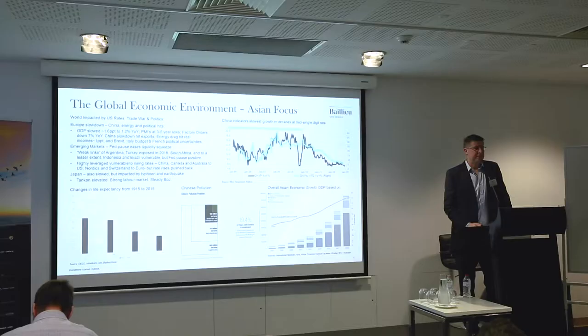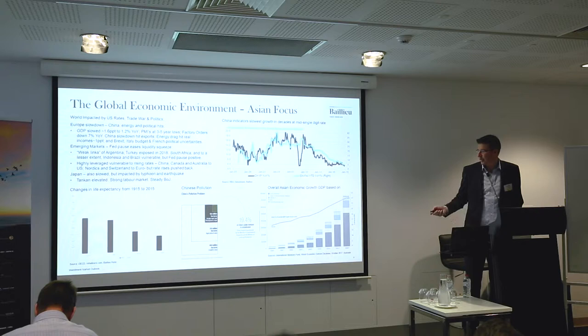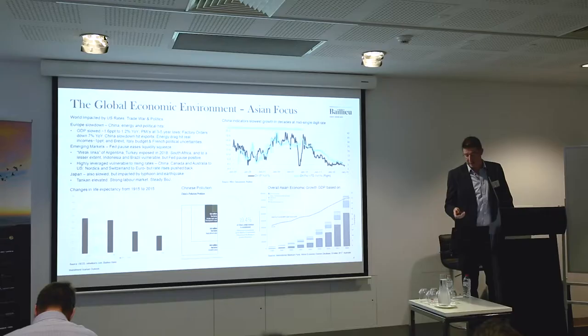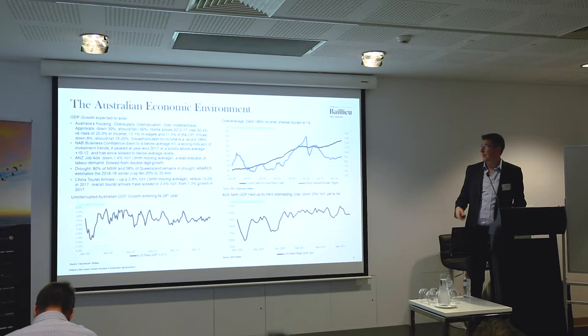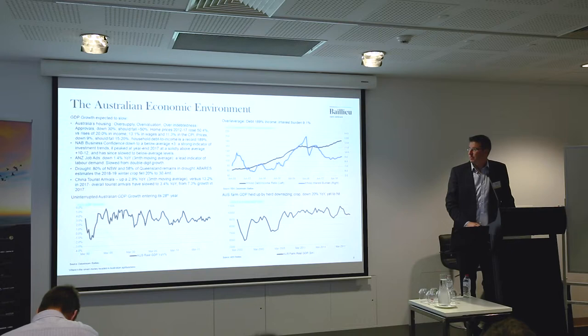Another key driver relates to China's pollution problem. This chart shows a square representing the whole land mass of China — and within that, the amount they're able to produce, and the amount of land that's actually polluted. About 20% of China's land mass is polluted and unable to grow crops. That's an important point, and partly why the Chinese are so interested in South Australia and Australia more broadly.